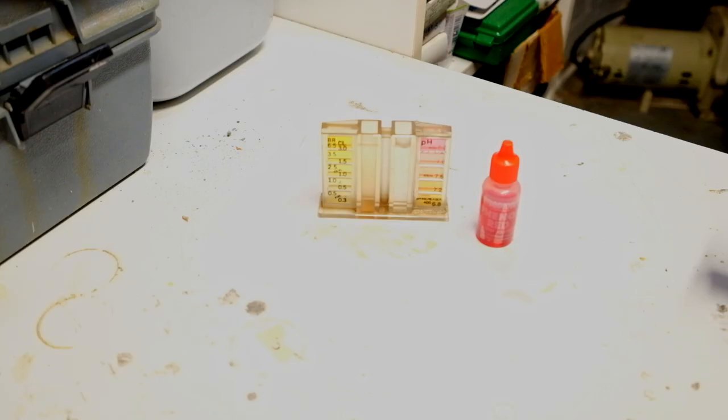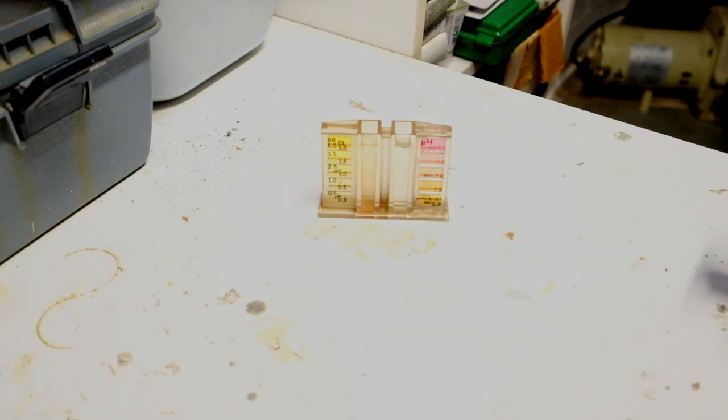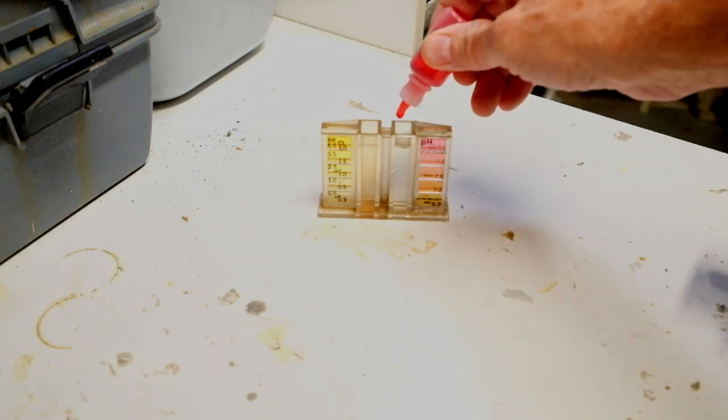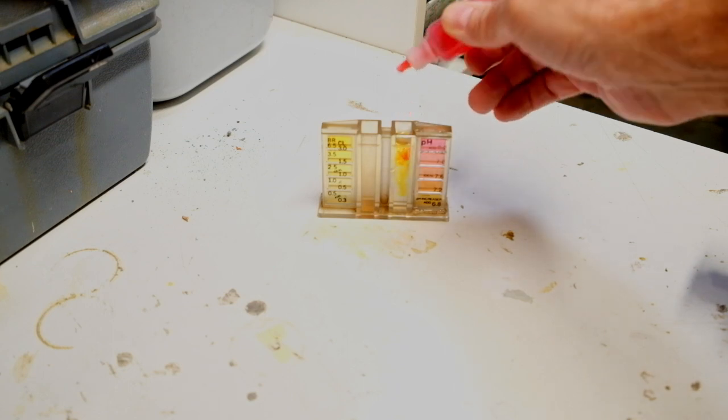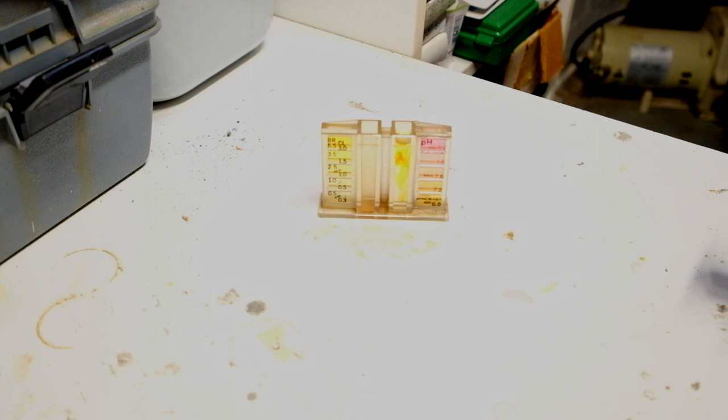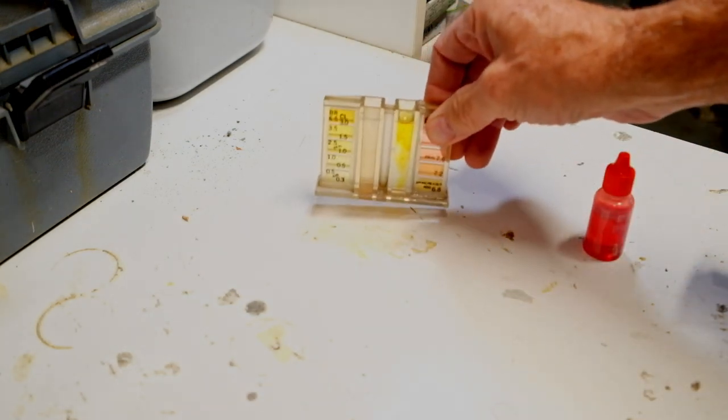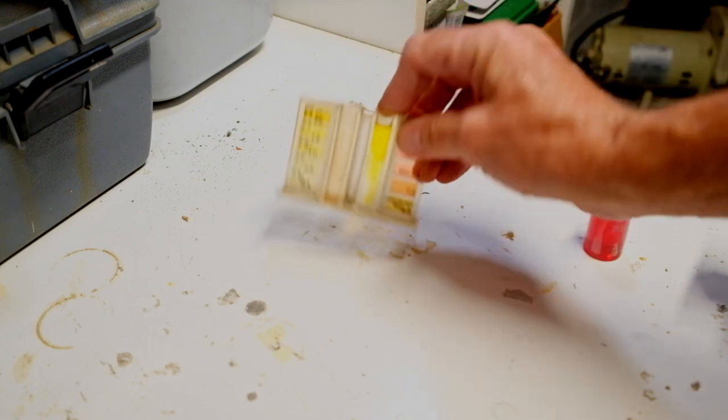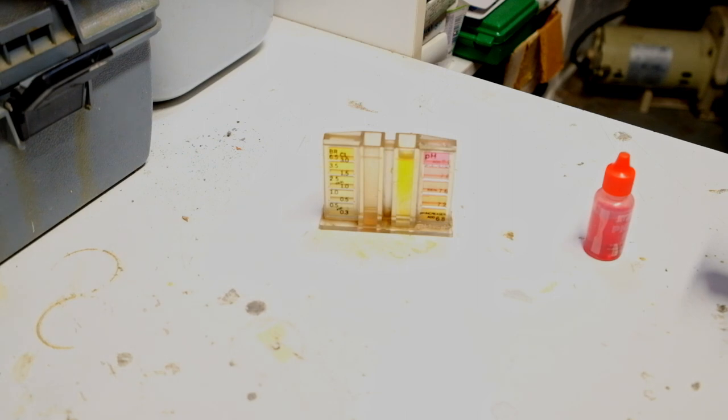I'm gonna test the water sample right now. It's a pool tester so it only goes down to 6.8. We'll put four drops in and see what happens. It's very yellow, so that means it's very acidic. We'll see what happens after I install it.